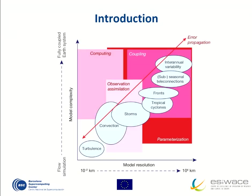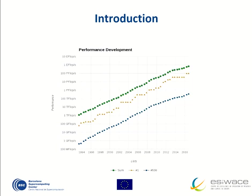This improvement is possible because we are increasing the complexity of our models — increasing model resolution, which improves result accuracy, including more observations, more coupled components, information about storms, vegetation, or chemistry. At the end we are increasing model complexity a lot. The main problem is that this requires more and more computational power to simulate these new complex models in the same time as before.